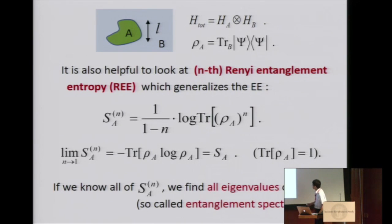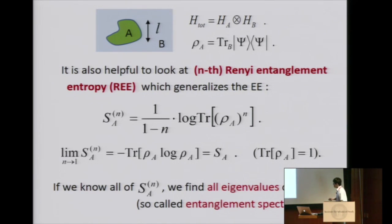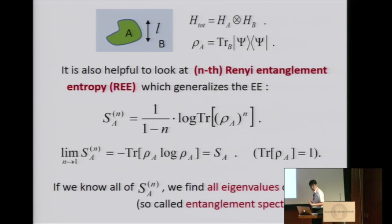If we know all of these Rényi entropies for any n, in principle we can say that we know all eigenvalues of the reduced density matrix by diagonalization. This is recently called the entanglement spectrum, and there are lots of works in condensed matter literature on this these days.